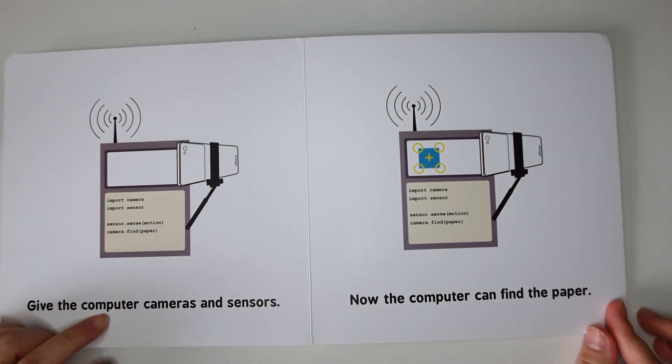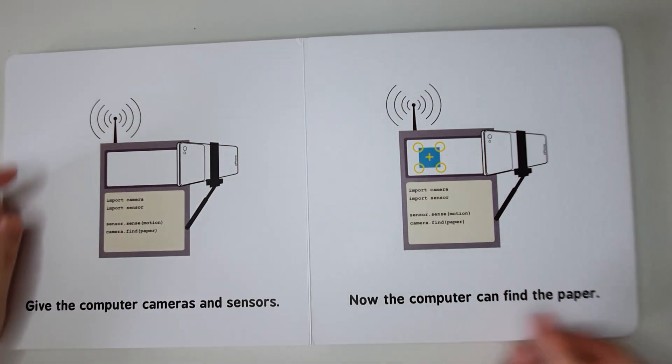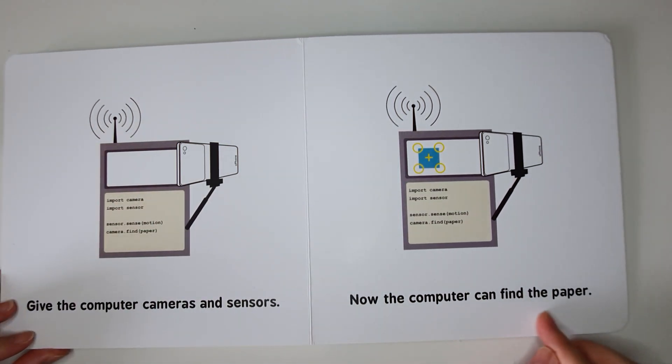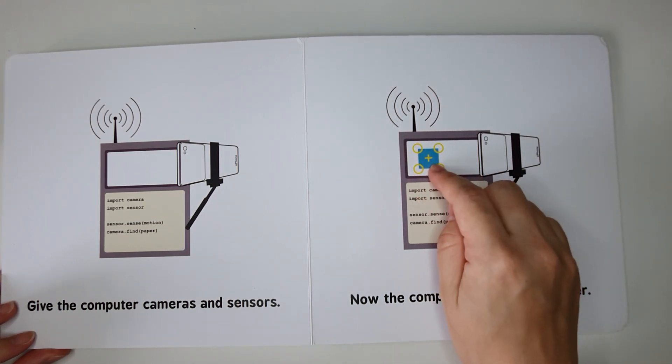We give the computer cameras and sensors. This is the camera, this is the sensor. Now, the computer can find the paper by looking for the edge and the center of the paper.